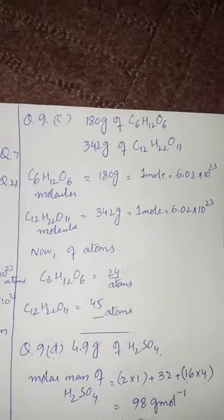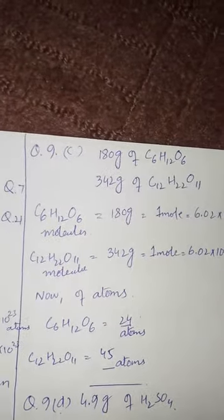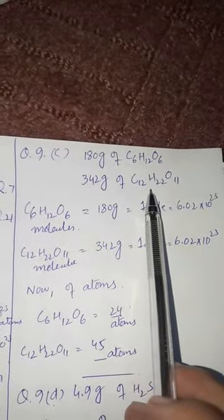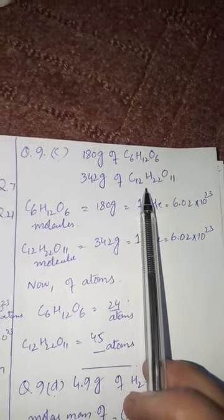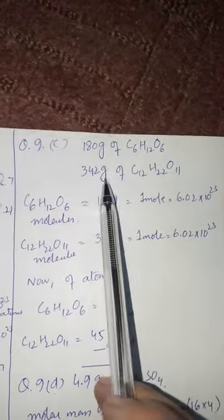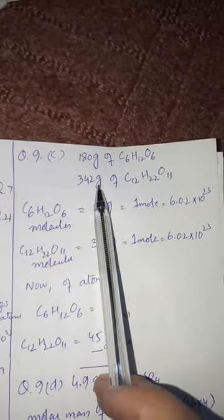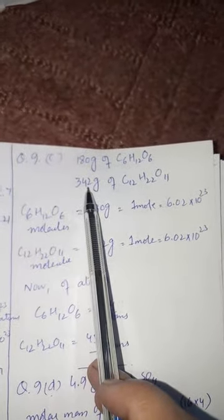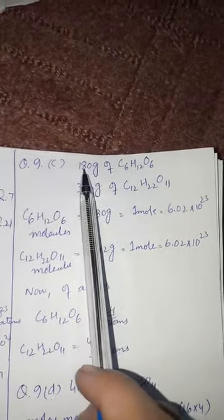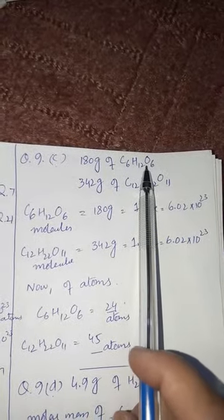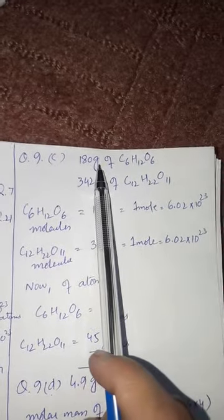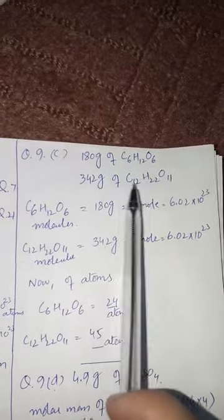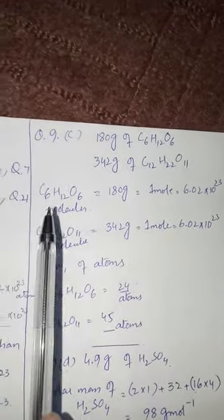Question number 9 C part says: 180 grams of glucose and 342 grams of sucrose have the same number of molecules, but a different number of atoms present in them. How do we define the number of moles? We said that the mass in grams expressed as the atomic mass of an element expressed in grams is called one mole — this is the mole definition. The atomic mass is 180 grams molecular mass in the case of molecules.